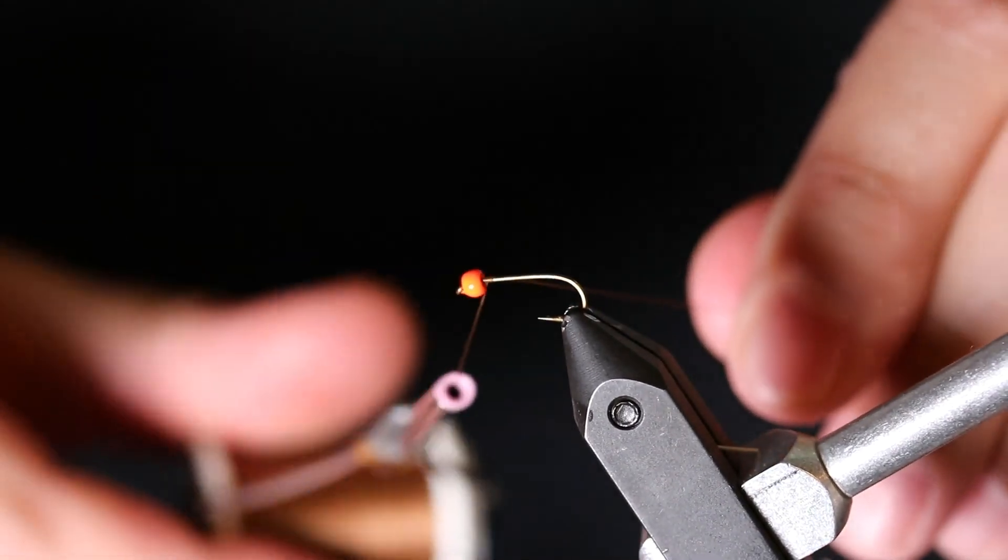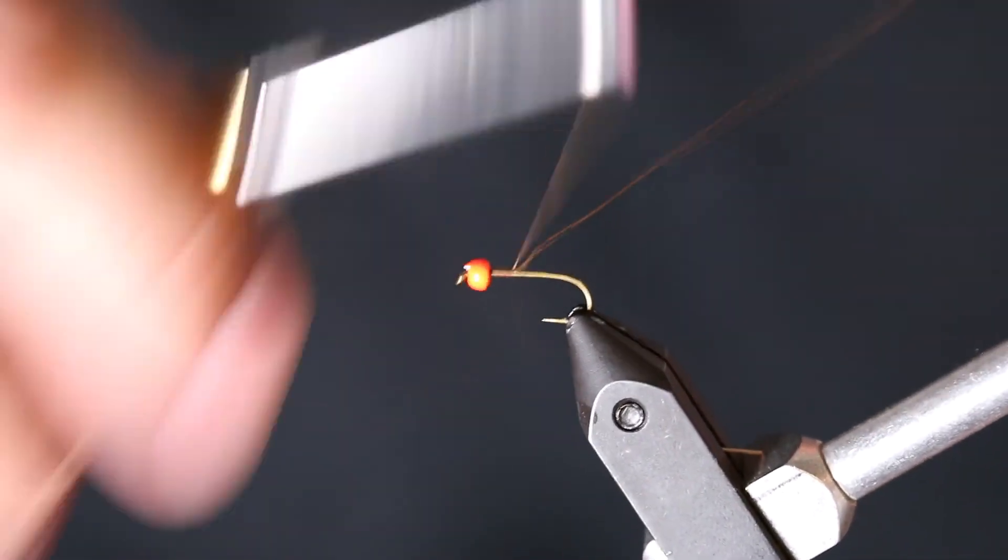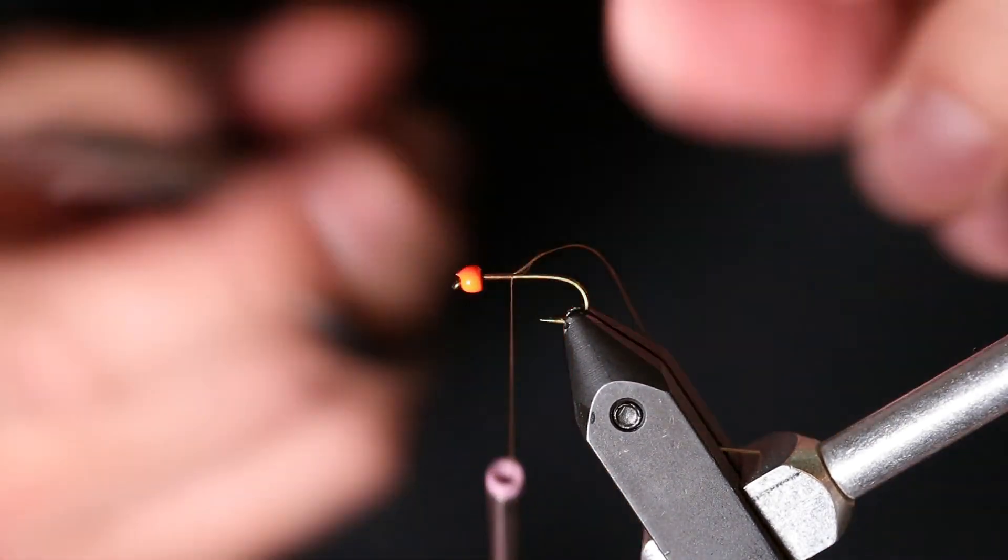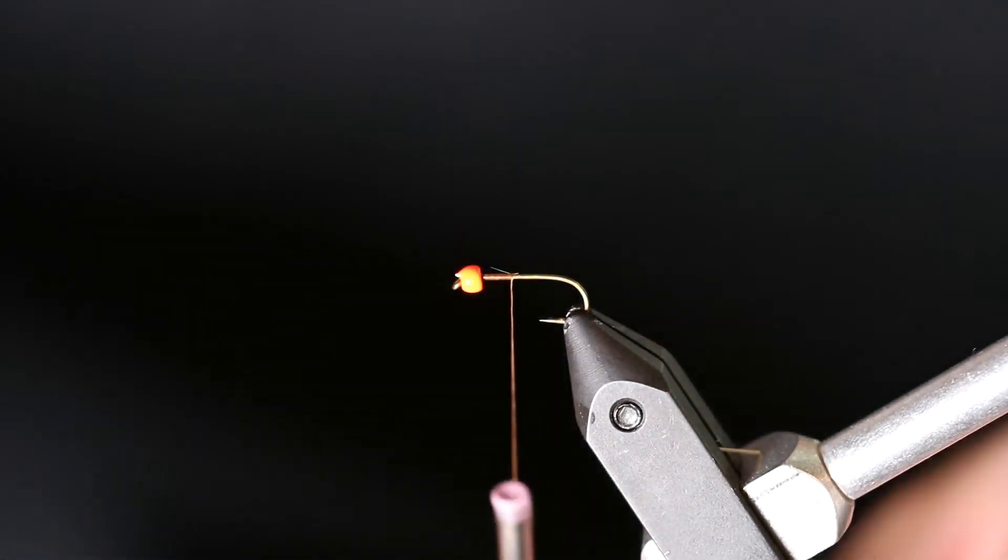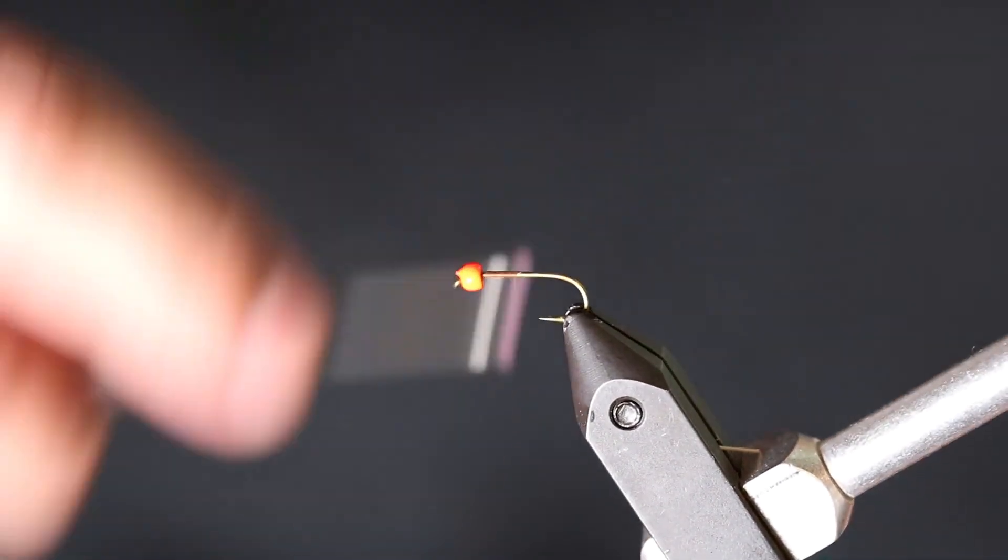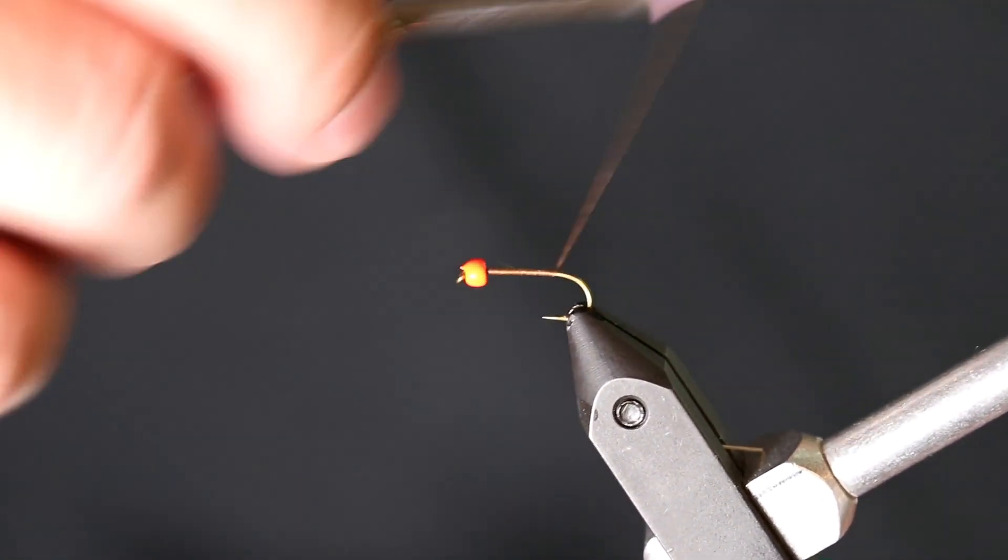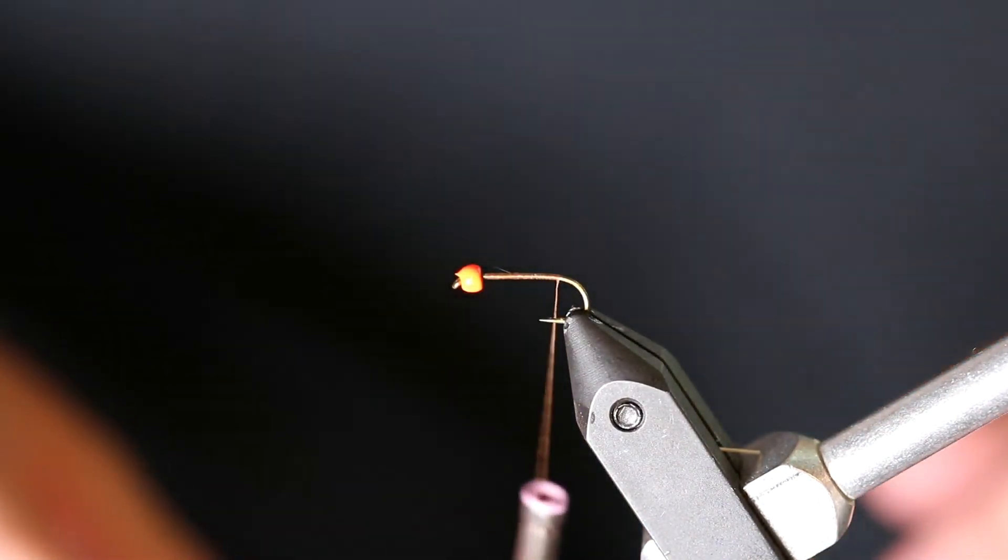Just go ahead and start off by putting your thread onto the shank of the hook. Once you have that started on, go ahead and either snip or break your tag end off. Let's work that back to just after the hook point.